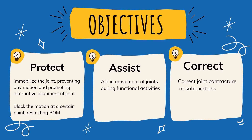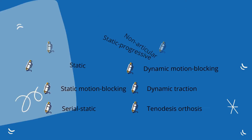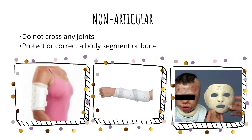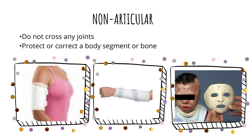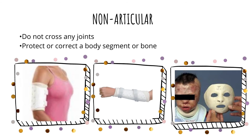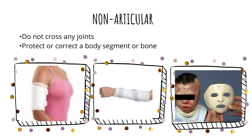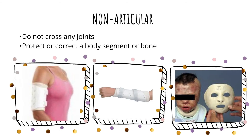There are different categories and classifications of orthosis: non-articular, static orthosis, static motion blocking, serial static, static progressive, dynamic motion blocking, dynamic traction, and tenodesis orthosis. The first category is the non-articular orthosis. From the name itself, it does not cross any joints — it only protects or corrects a body segment or bone. Examples shown include the circumferential non-articular humeral stabilizing orthosis, the circumferential non-articular ulna-stabilizing orthosis, and the non-articular scar-controlling face mask.